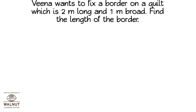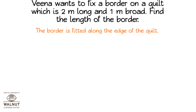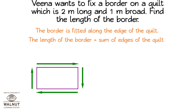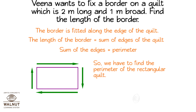Veena wants to fix a border on a quilt which is 2 meters long and 1 meter broad. Find the length of the border. The border is fitted along the edge of the quilt. The length of the border is equal to sum of the edges of the quilt. Sum of the edges is equal to perimeter, so we have to find the perimeter of the rectangular quilt. That will be the length of the border.